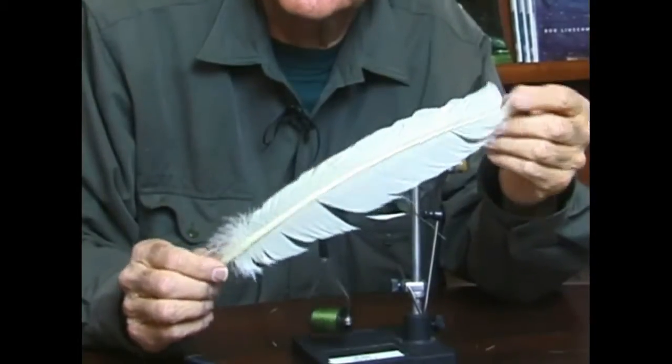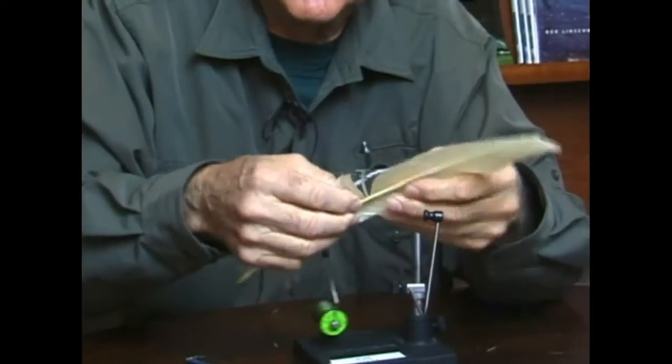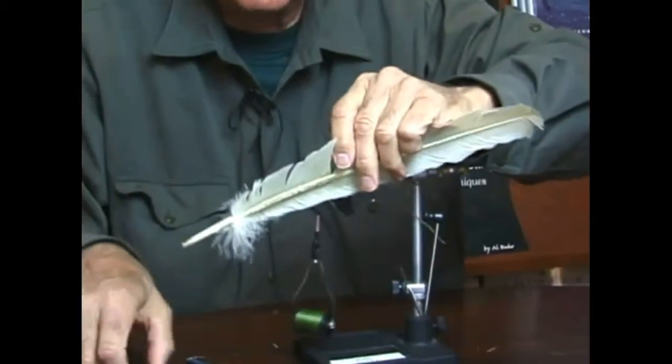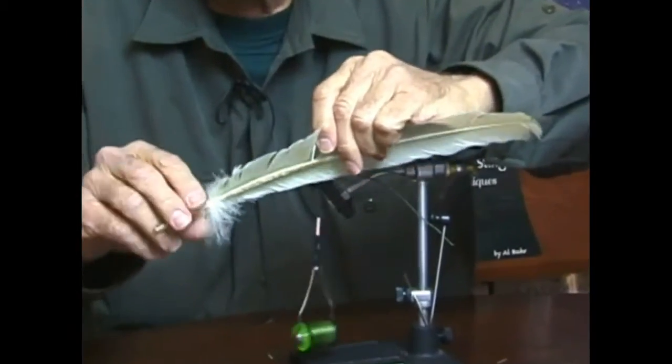Next I'm going to select a turkey round and use the feather fibers for a total of about five as the fly body. I'm going to clip them off at the base of the round which is the stem.